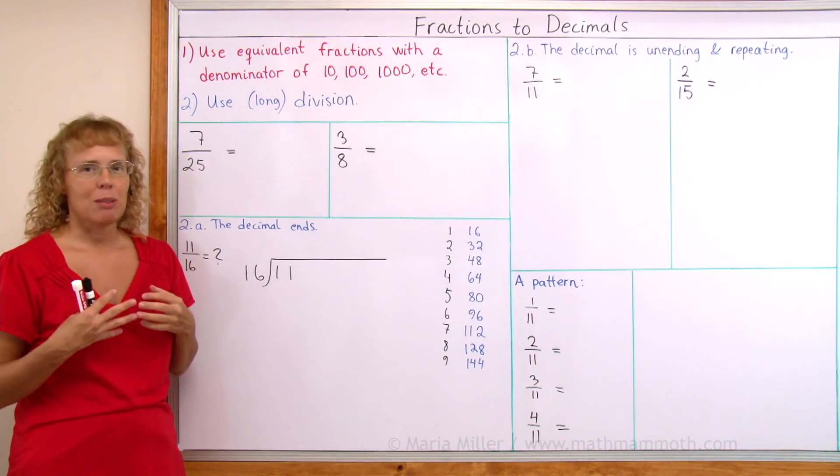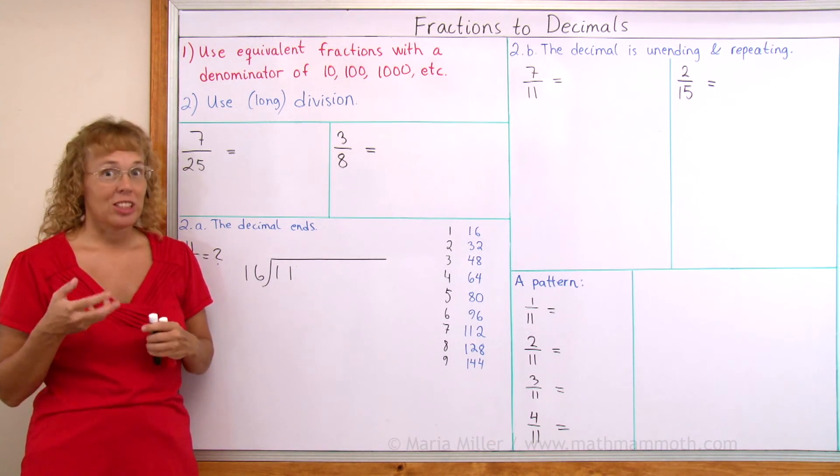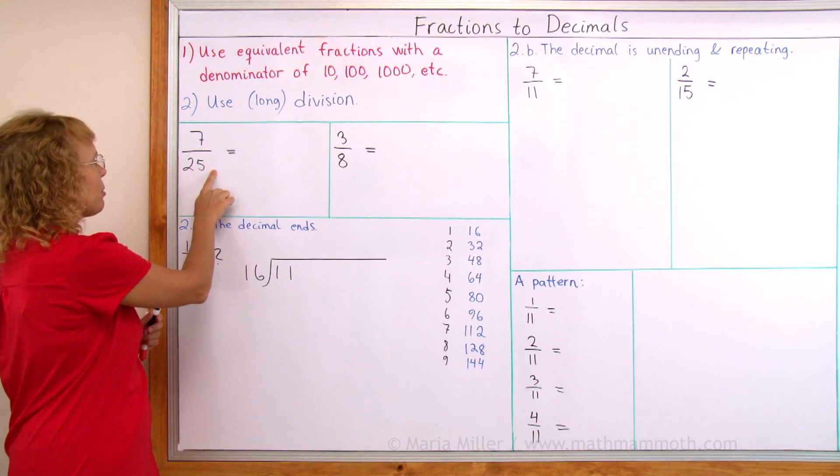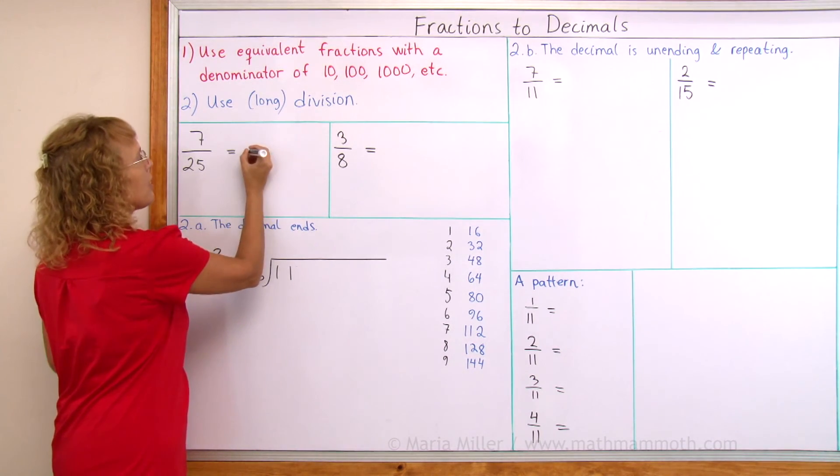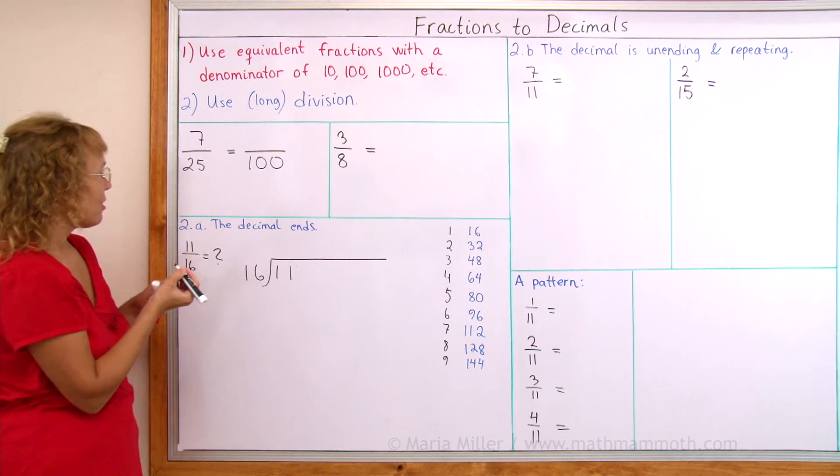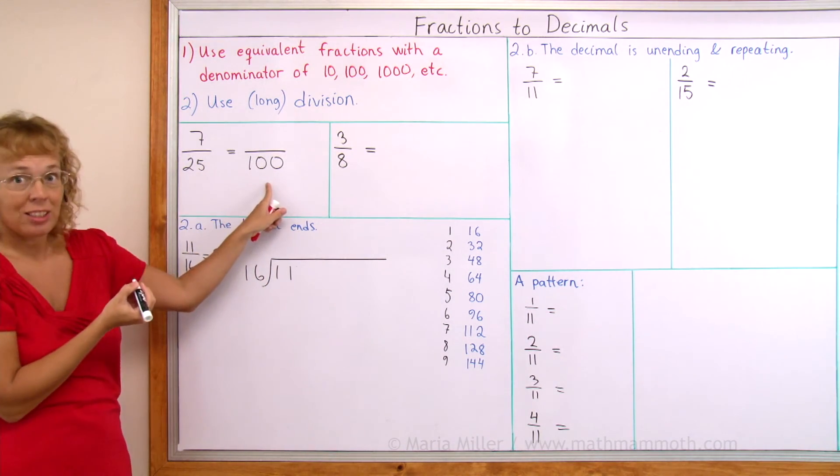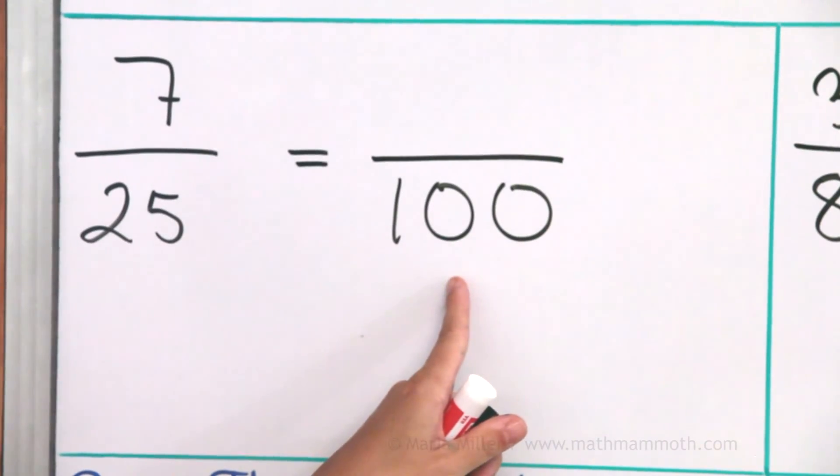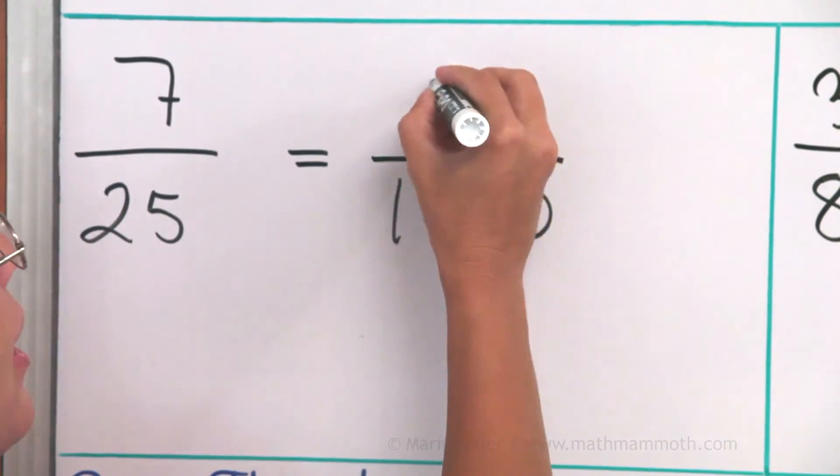Let me show you first examples of the first method, which sometimes works. For example, 7 over 25. I can write an equivalent fraction with a denominator of 100 because 25 goes evenly into 100. 25 times 4 is 100, so 7 times 4 goes here, 28.